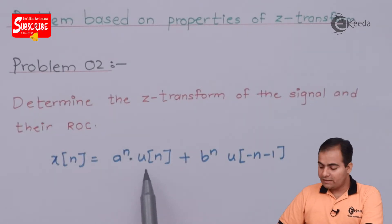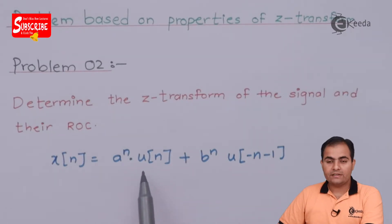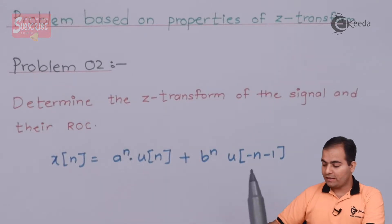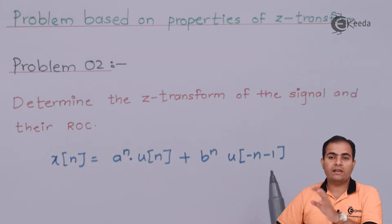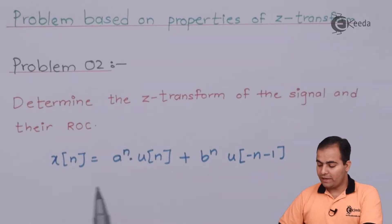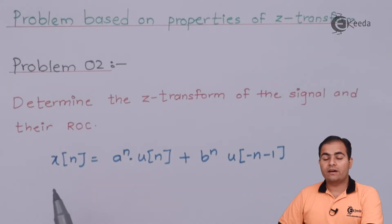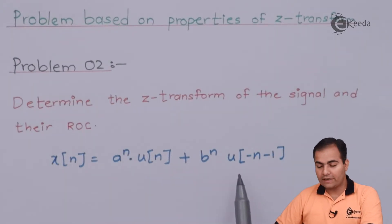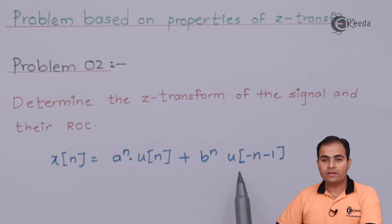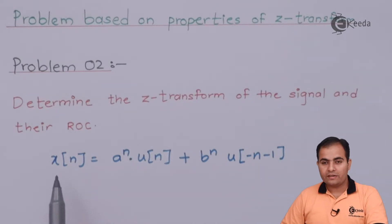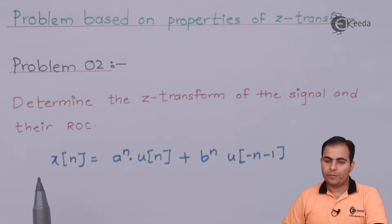The reason is that U(n) has a right-handed-sided ROC and U(-n-1) has a left-handed-sided ROC. So X(n), being a combination of both, gives us a two-sided ROC.